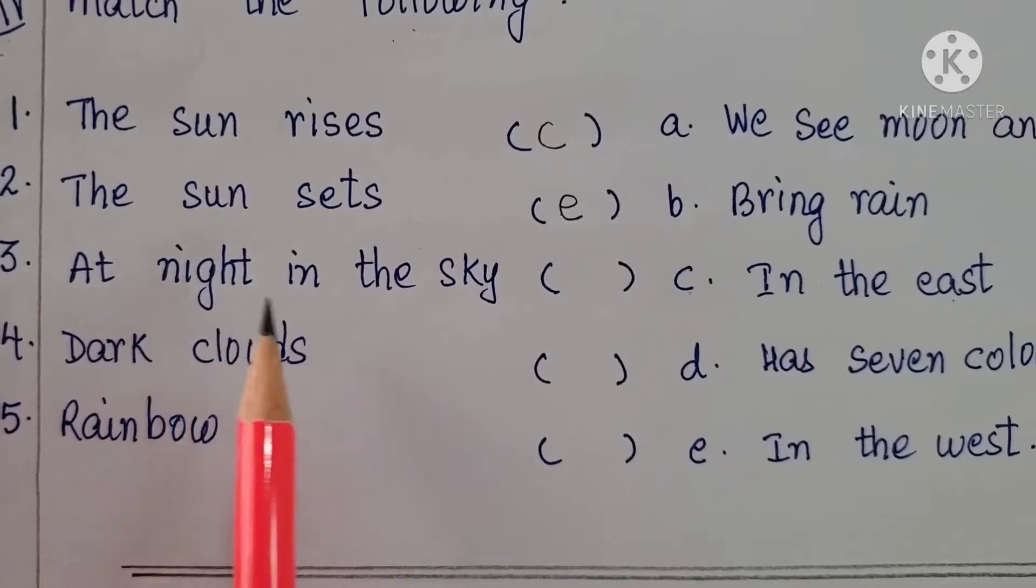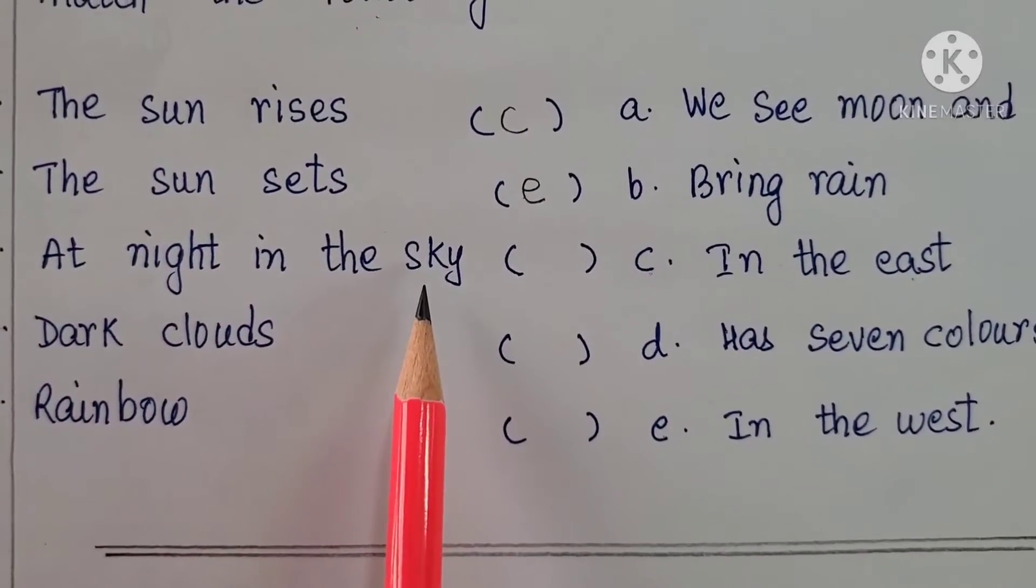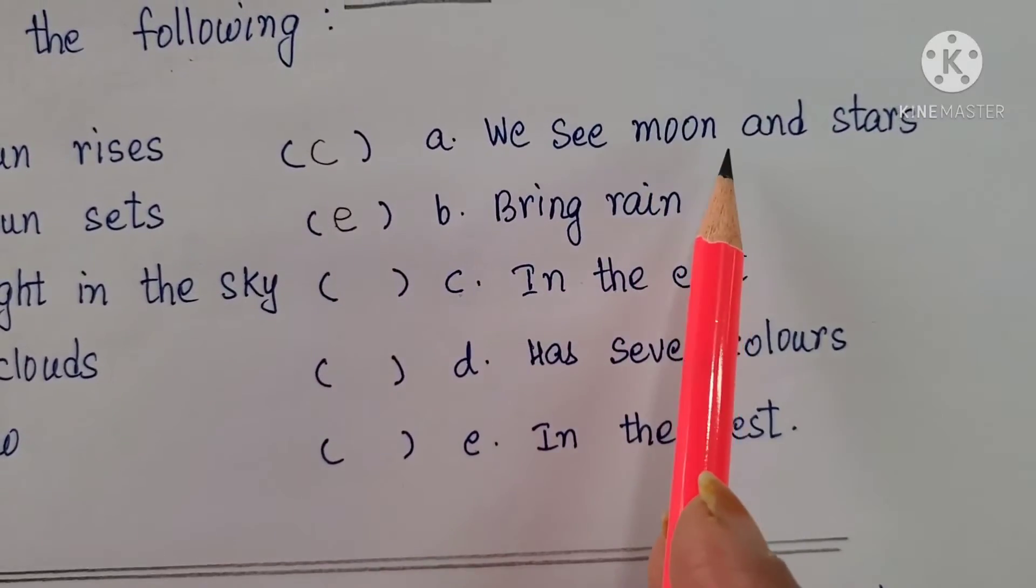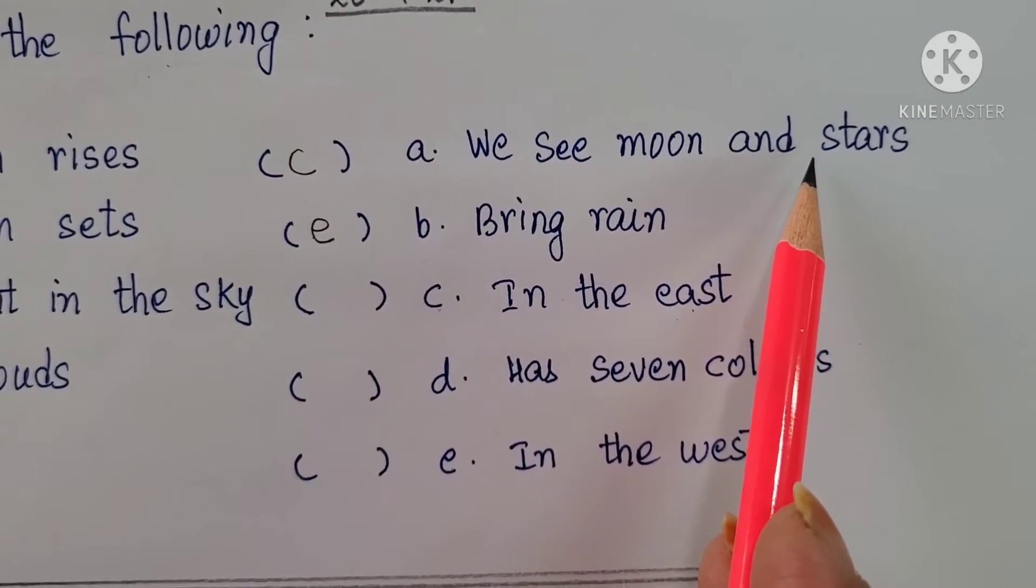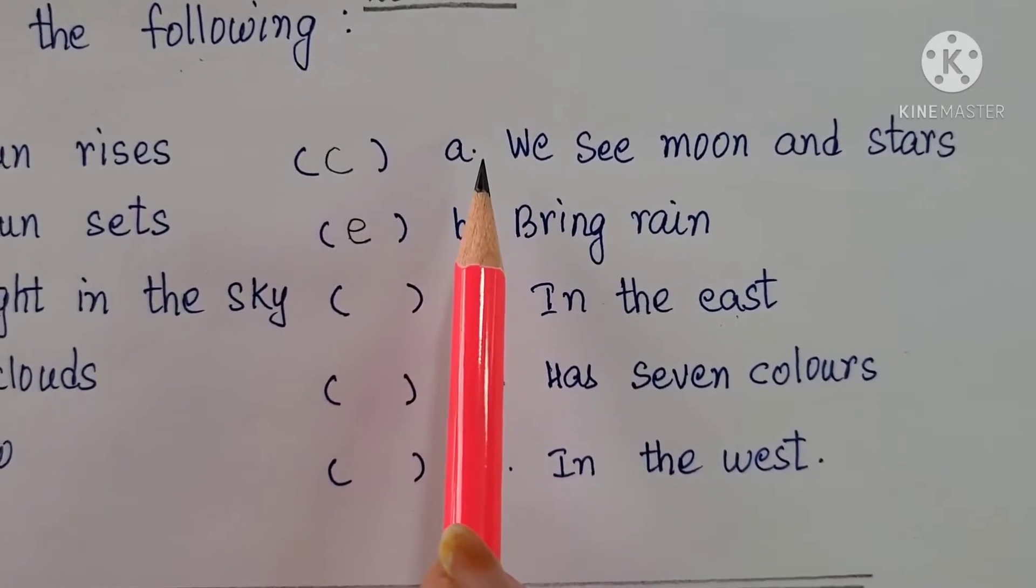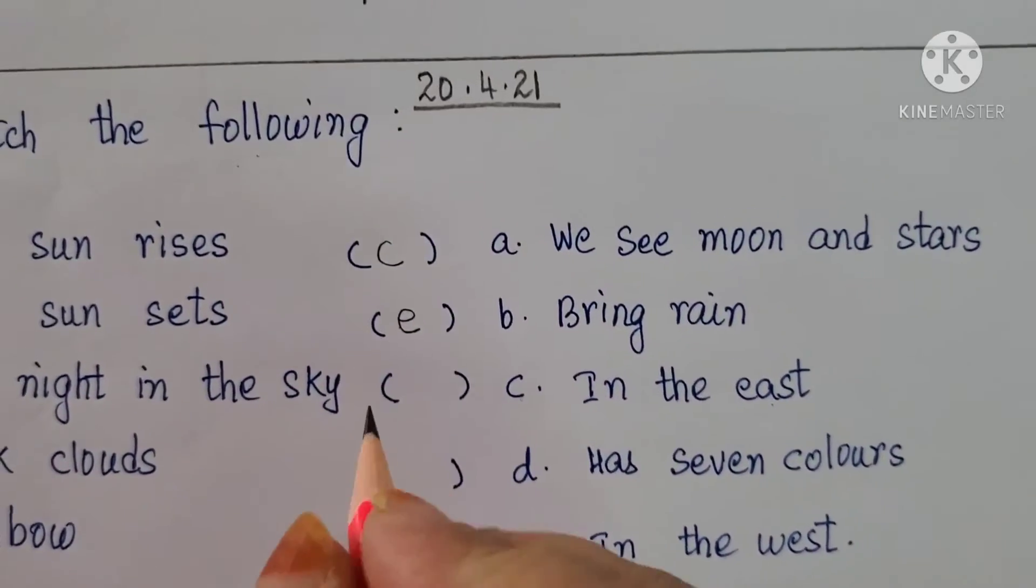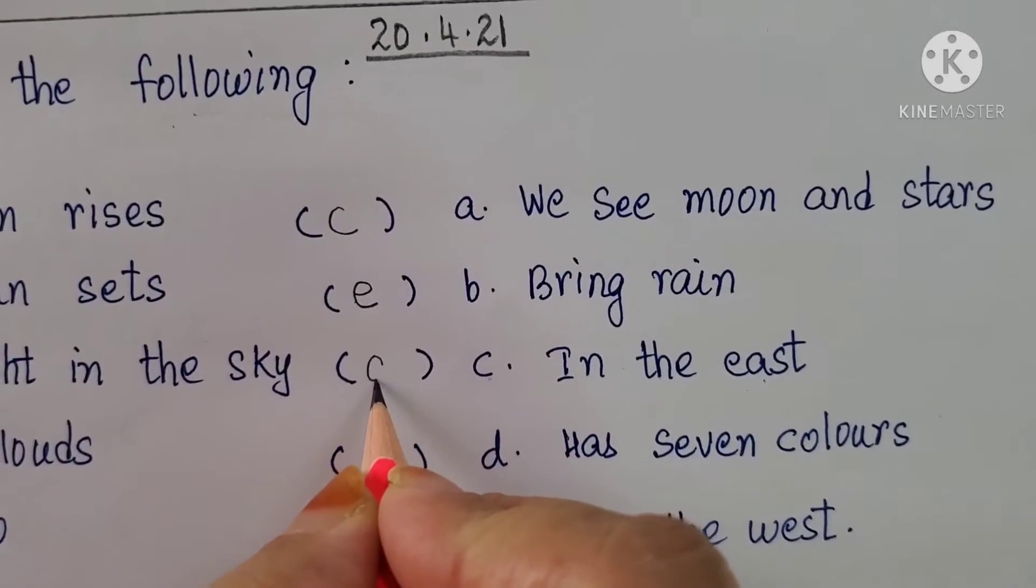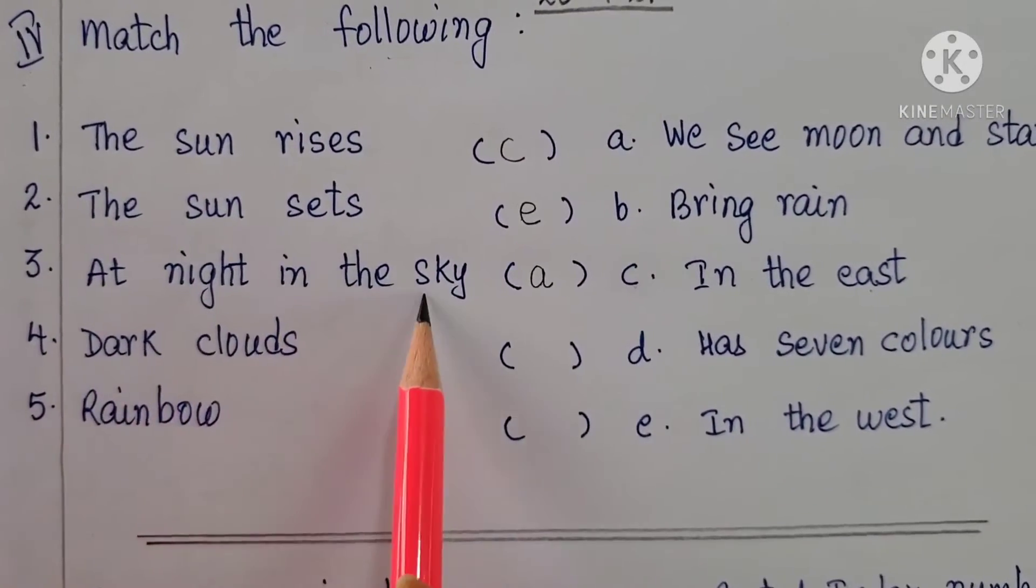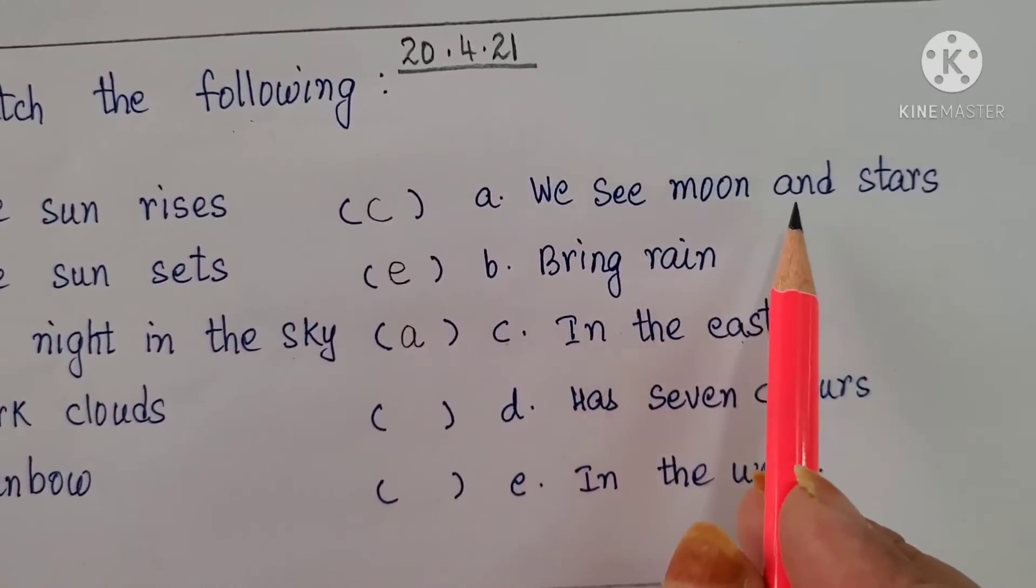Third one. At night in the sky. What do you see? We see moon and stars. What do you see? We see moon and stars. Which alphabet is here? A. So you need to match it with A. At night in the sky, we see moon and stars.